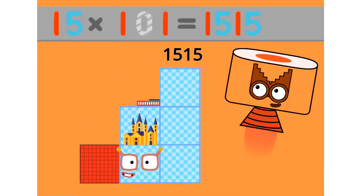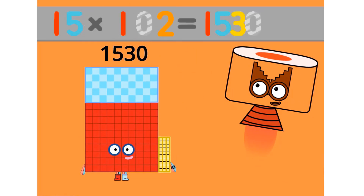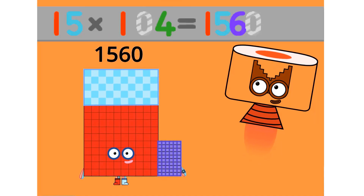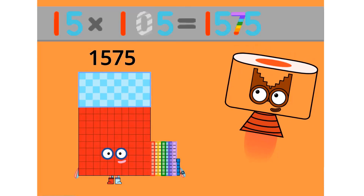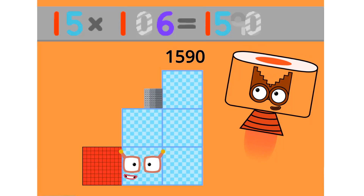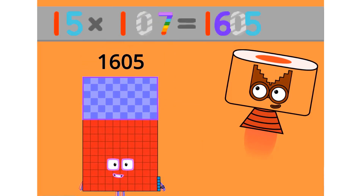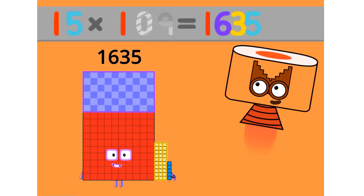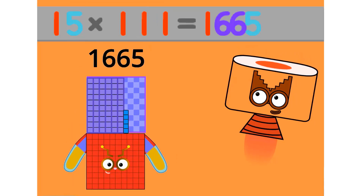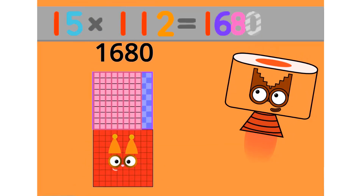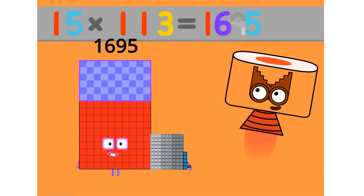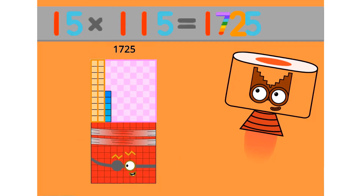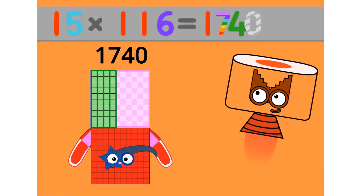15 x 91 equals 1365. 15 x 92 equals 1380. 15 x 93 equals 1395. 15 x 94 equals 1410. 15 x 95 equals 1425. 15 x 96 equals 1440. 15 x 97 equals 1455. 15 x 98 equals 1470. 15 x 99 equals 1485. 15 x 100 equals 1500.